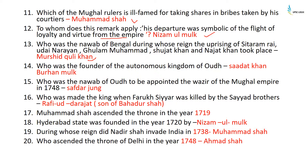The Nawab of Awadh appointed as Wazir of the Mughal Empire in 1748 was Safdar Jung. When Farrukhsiyar was killed by the Sayyid brothers, Rafi ud-Darajat was made king — he was the son of Bahadur Shah. Muhammad Shah ascended the throne in 1719. Hyderabad state was founded in 1720 by Nizam ul-Mulk. Nadir Shah invaded India in 1738 during the reign of Muhammad Shah. Ahmed Shah ascended the throne of Delhi in 1748, and in the same year Ahmed Shah Abdali also attacked.